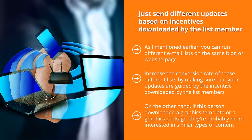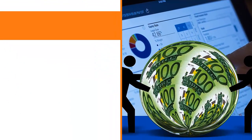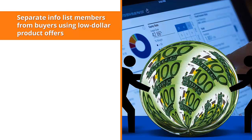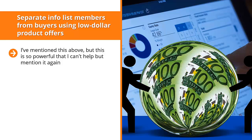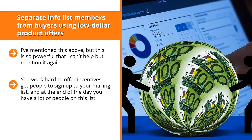Make sure that your updates speak to these different incentive preferences so you can maximize your sales conversions. Separate info list members from buyers using low-dollar product offers. Depending on your niche, it may be unavoidable that you end up with a general information list. You work hard to offer incentives, get people to sign up to your mailing list, and at the end of the day you have a lot of people on this list. However, these people are generally just looking for general information on your niche.